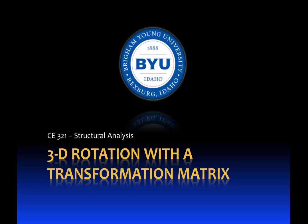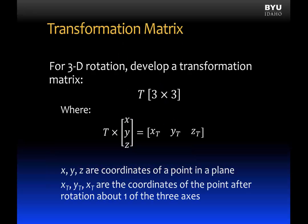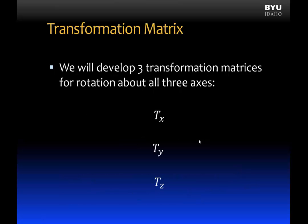3D rotation with a transformation matrix. I'm going to show you how to take a point in three-dimensional space with x, y, z coordinates and find the new coordinates of that point after it is rotated about some axis. To do that, we need a transformation matrix. For 3D rotation, we develop a 3-by-3 transformation matrix T, multiply it by a vector containing the coordinates x, y, z, and we get the transformed coordinates after rotation. We will develop transformation matrices for rotation about all three axes: x-axis, y-axis, and z-axis.